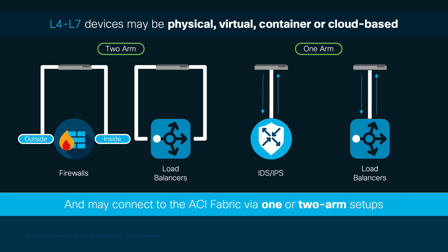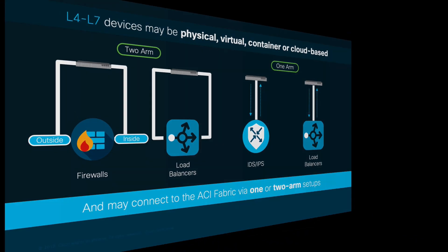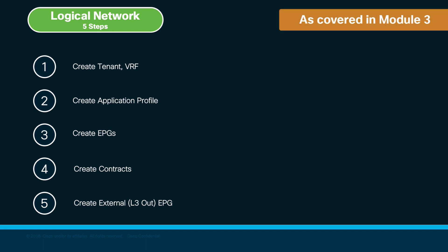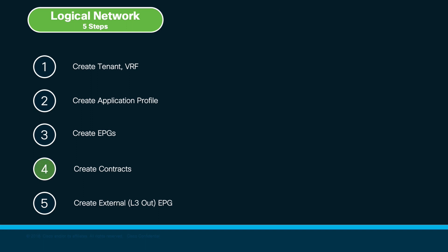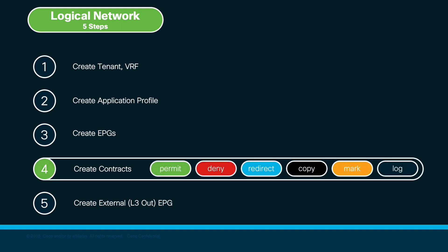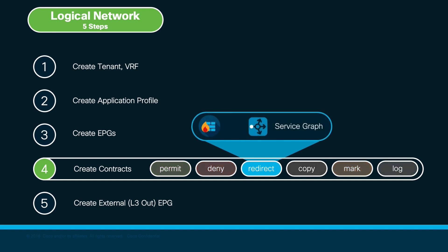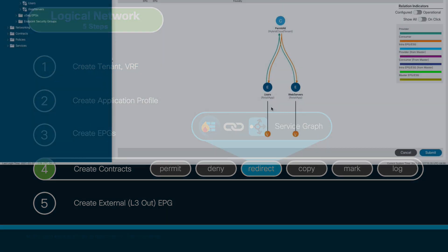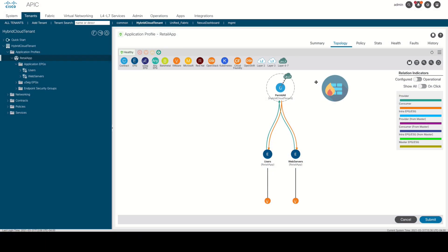We can insert our L4-L7 services using Service Graphs by leveraging our well-known five logical network configuration steps. We will do this as part of step four, where we define how different EPGs communicate using contracts. Contract configurations not only allow you to permit or deny traffic based on rules, but we may also mark, log, copy, or redirect traffic. These last options are enabled by using Service Graphs. We may redirect traffic to a specific service or service chain in a service graph by simply applying that graph on top of a contract, which will redirect the traffic to the desired service before it reaches its destination EPG.